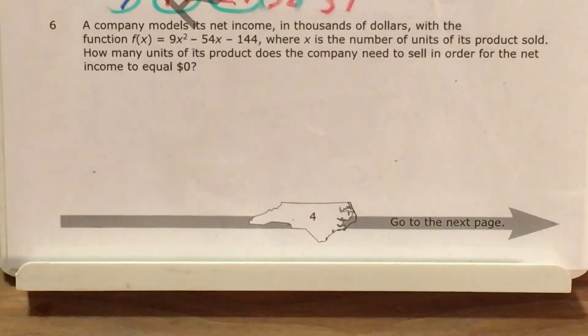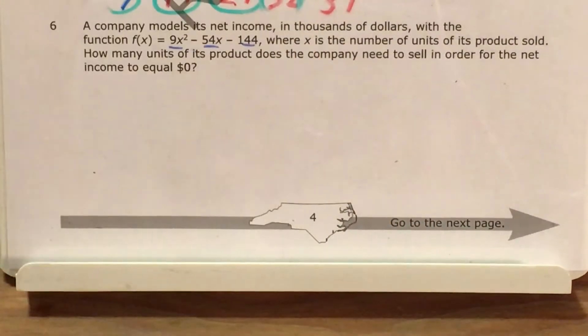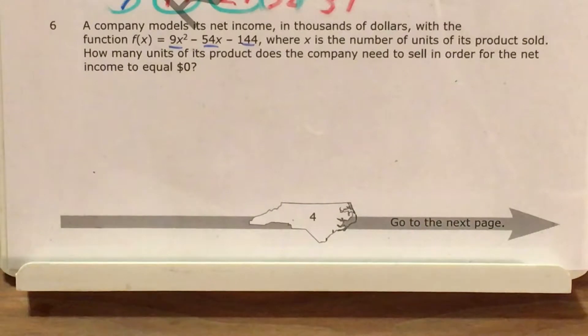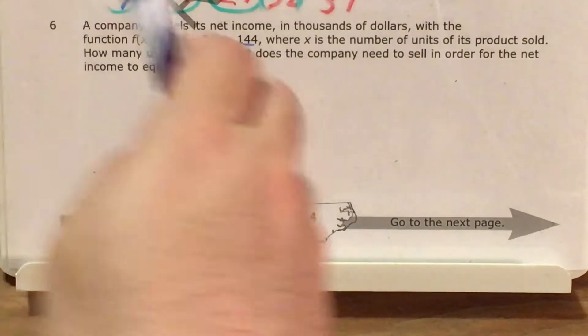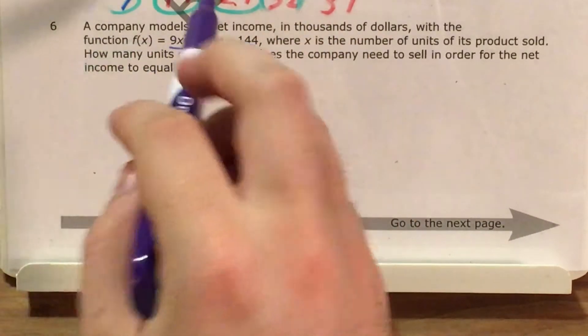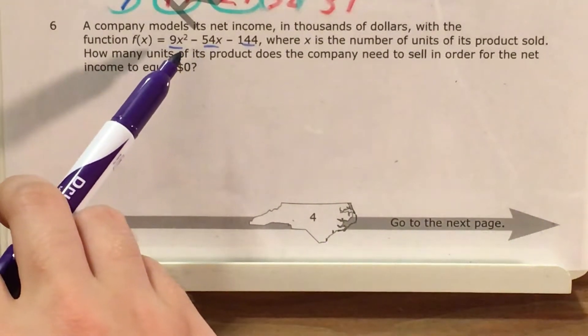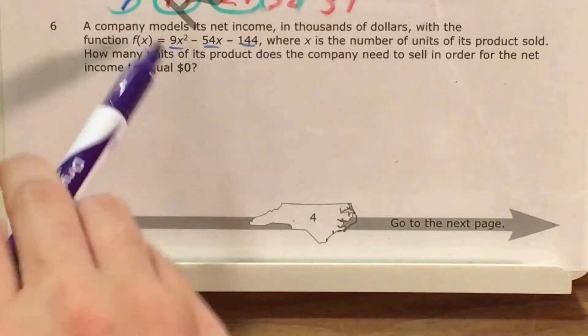But the first thing I'm going to start with is actually looking at just my coefficients, just my numbers, not necessarily my variables. And I'm going to look for some number that they have in common as a factor. Now that number is 9, and I actually got there by doing some divisibility tests for 9. So if any number has digits that add up to 9 or a multiple of 9, then that number is itself a multiple of 9.